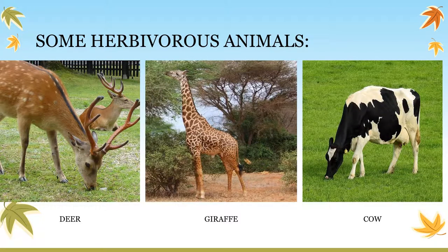Deer, giraffes, and cows are some examples of herbivore animals. Deer eat grass, leaves of plants and trees, and sometimes fruits. Giraffes mostly eat leaves at the top of the branches of trees. Cows, as all of you know, eat grass. These are examples of herbivore animals.